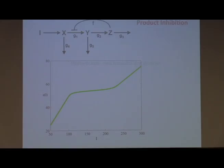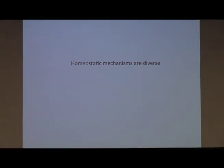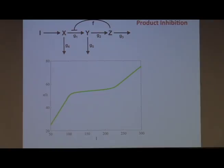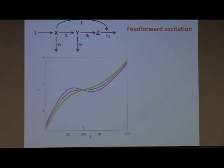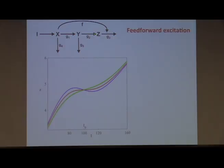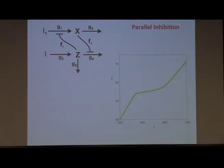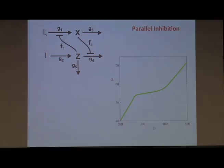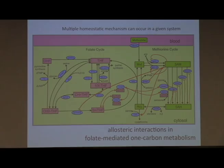Homeostatic mechanisms are diverse. We have examples of product inhibition — with the right parameters for those arrows, you can create very nice homeostatic plateaus. Feed-forward excitation can produce homeostasis, invariance of output. We can have more complex parallel inhibitions where, again, depending on the parameters, you can generate a stable region. Variation in those parameters can either stretch or shrink that stable region over which the phenotype is sensitive or insensitive to environmental variation.